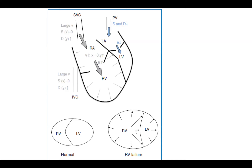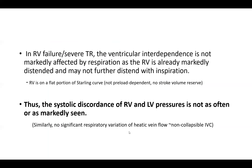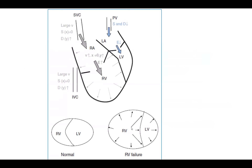So you get ventricular interdependence that is not very much subject to respiratory variation — that's the difference between constrictive pericarditis and the functional constriction you get in right heart failure. The RV is on the flat portion of the Starling curve, so even if you increase its preload, it's not going to increase its flow. That's the reason you don't get discordance.